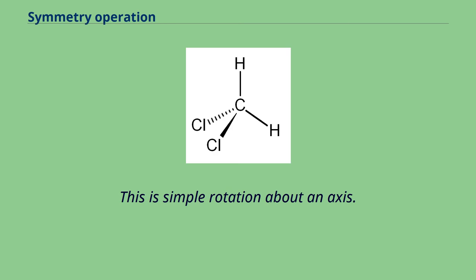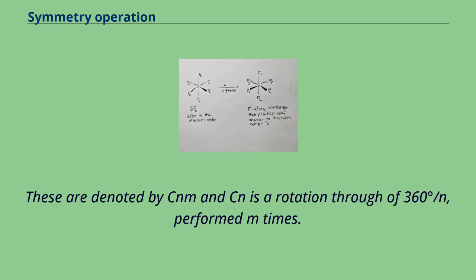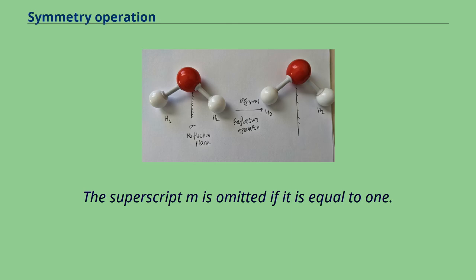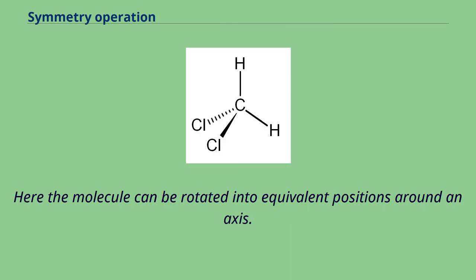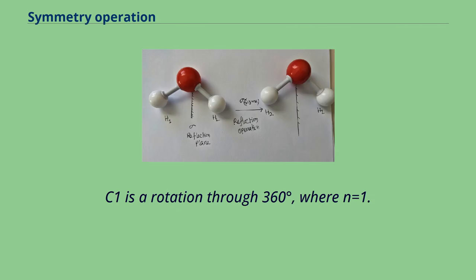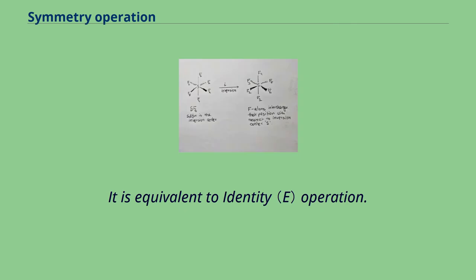This is simple rotation about an axis. These are denoted by CN^M and CN is a rotation through of 360 degrees/N, performed M times. The superscript M is omitted if it is equal to 1. Here the molecule can be rotated into equivalent positions around an axis. C1 is a rotation through 360 degrees, where N equals 1. It is equivalent to identity operation.